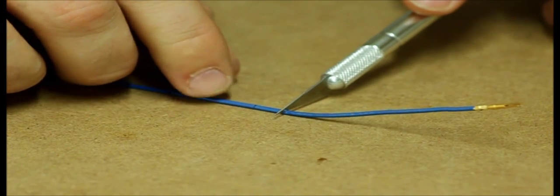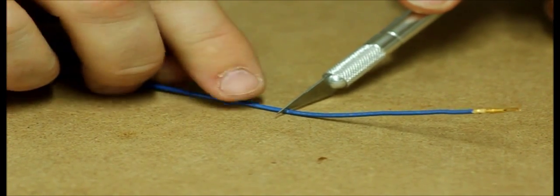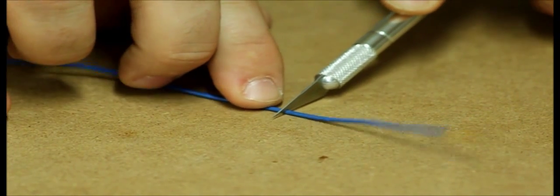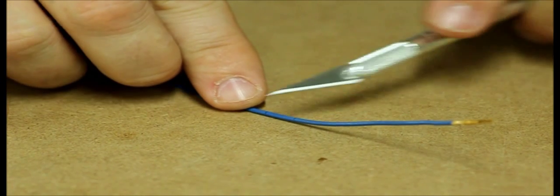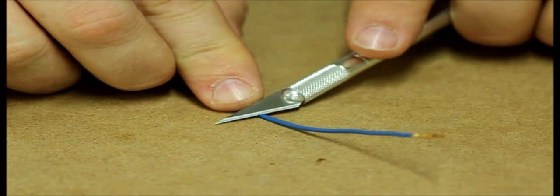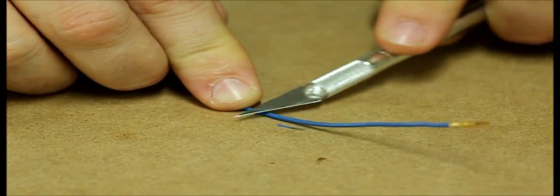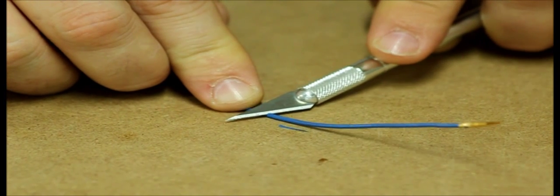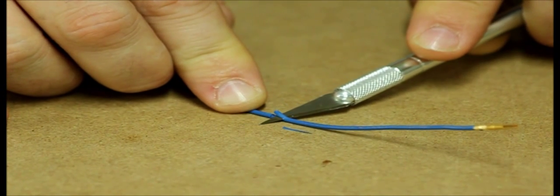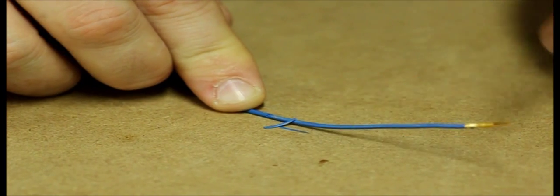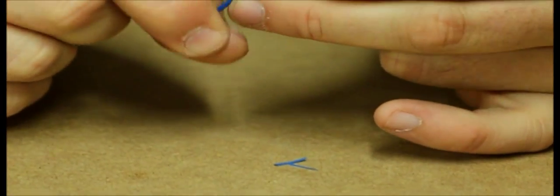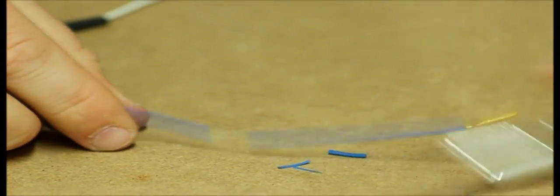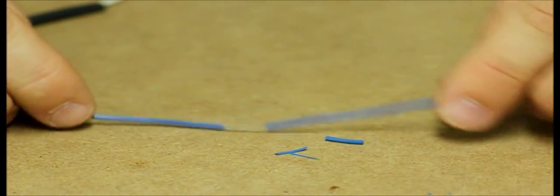Then, about three eighths of an inch from that other one, do the same thing. Then take the exacto knife and very carefully strip the sheathing off of the area in between the two points that you made. And you're left with an opening in the wire sheathing.